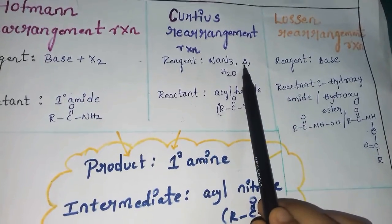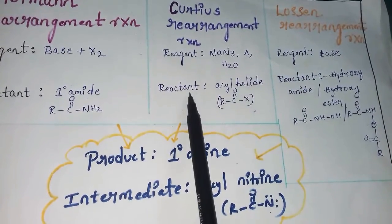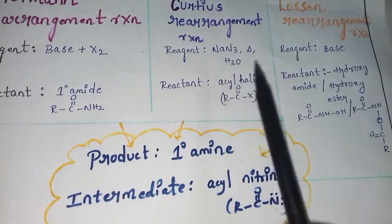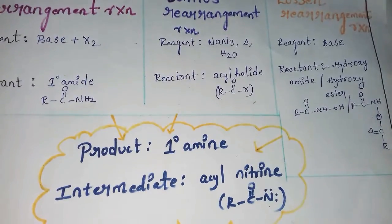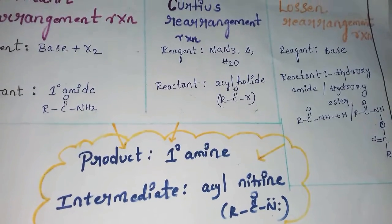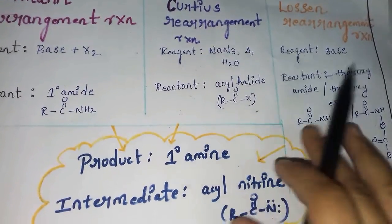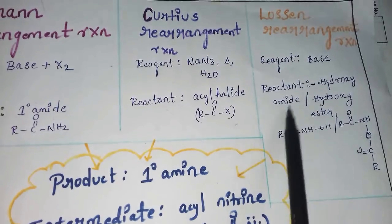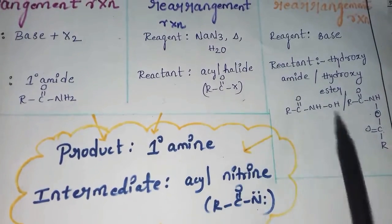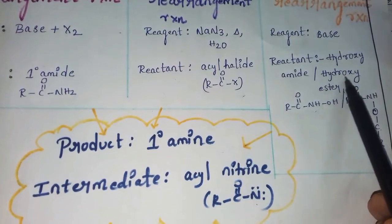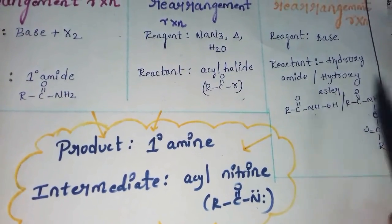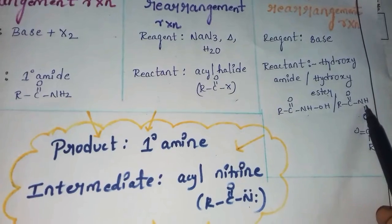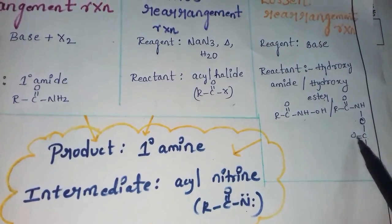Next is the Curtius rearrangement. The reagent is NaN3, heat, and water. The reactant is acyl halide, which reacts to form an acid azide — that is the main reactant used to proceed to get a primary amine. In the third reaction, Lossen rearrangement, the reagent is base and the reactant is hydroxamic acid (hydroxy amide) or hydroxamic ester (hydroxy ester).